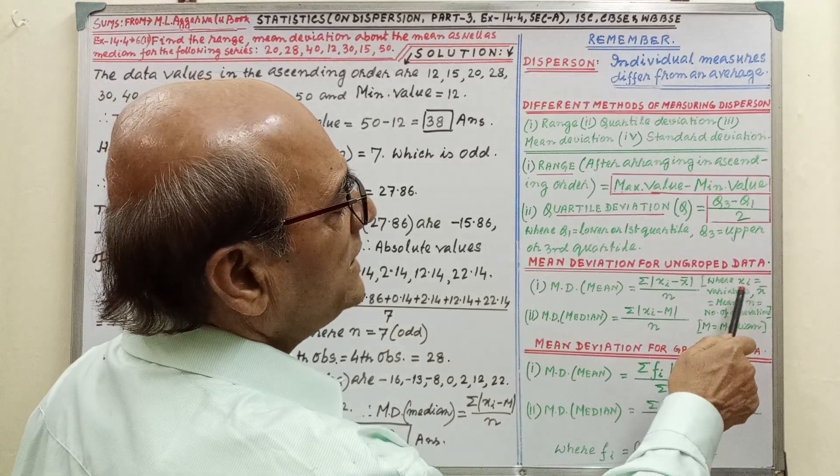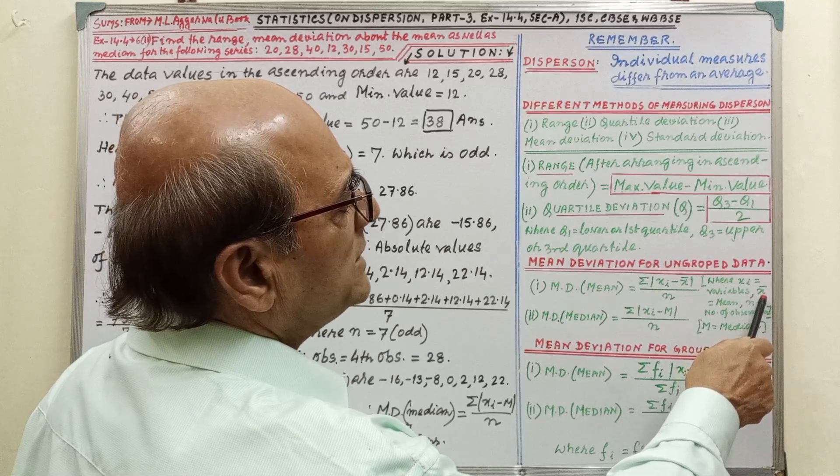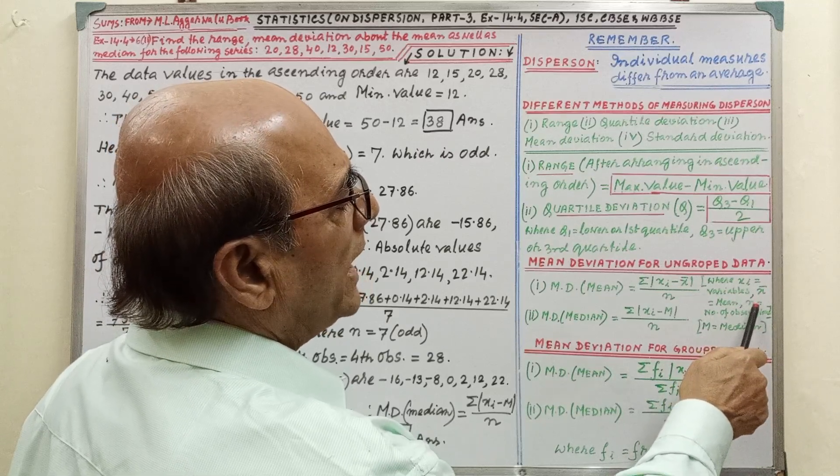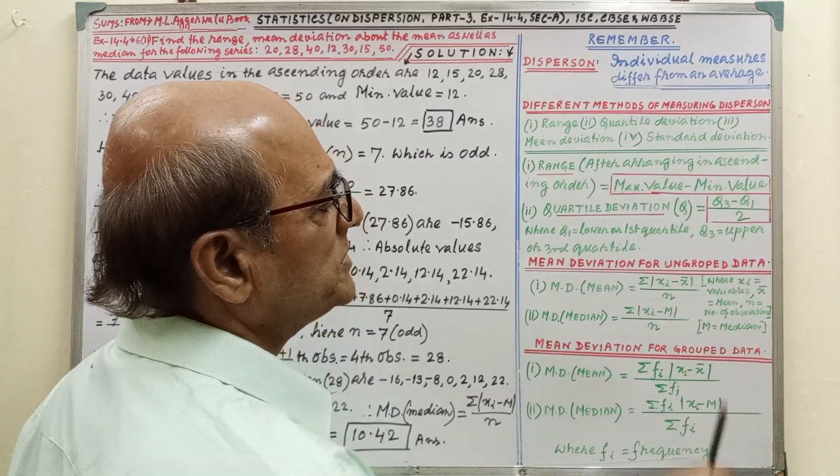Here, xi, that is variable, this is mean, n is the number of observation, and m is the median.